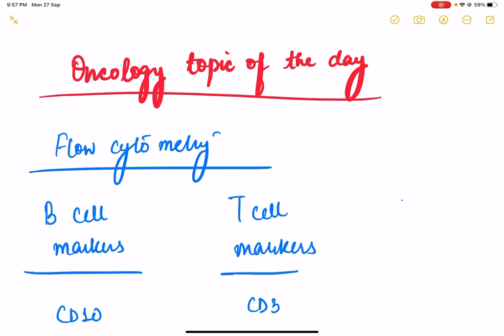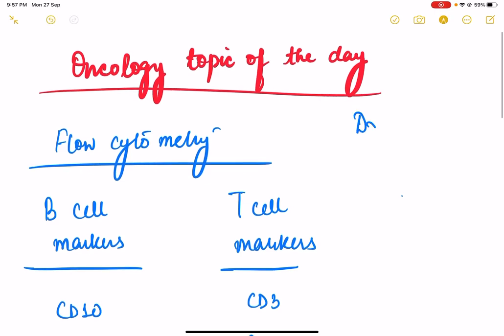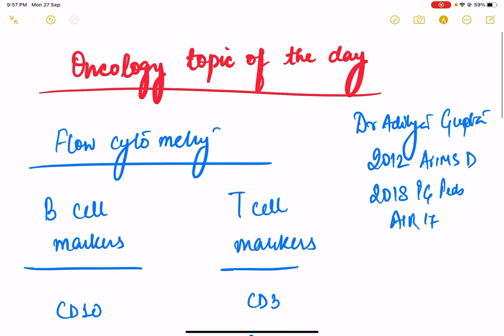Hello everyone, my name is Dr. Aditya Gupta. I am a 2012 batch AIIMS alumnus. I did my MBBS from AIIMS Delhi, then I did my PG in Pediatrics again from AIIMS Delhi, and I secured All India Rank 17 in AIIMS May 2018. And I am currently doing my DM in Pediatric Oncology from AIIMS New Delhi.